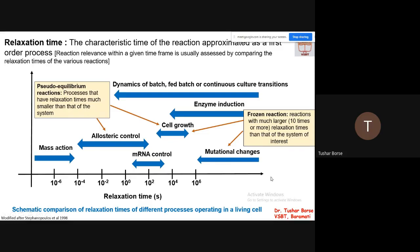You have another type of reactions called pseudo-equilibrium reactions — processes that have relaxation times much smaller than that of the system. If you are targeting cell growth, the allosteric control is very, very low, so you can ignore these reactions which are occurring at a very small rate, because they are not drastically going to affect your cell growth. This is under standard growth conditions — temperature, pH, etc. Under those particular conditions you can correlate between different types of activities or phenomena occurring within the cell.